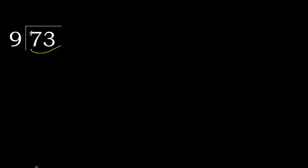9 — multiply by which number is nearest to 73 but not greater. 9 multiply by 9 is greater. Multiply by 8: 72 is not greater.